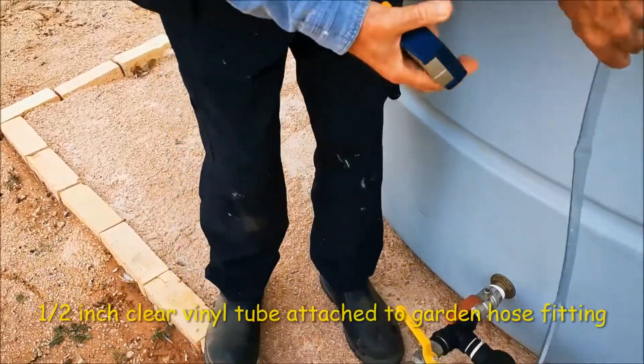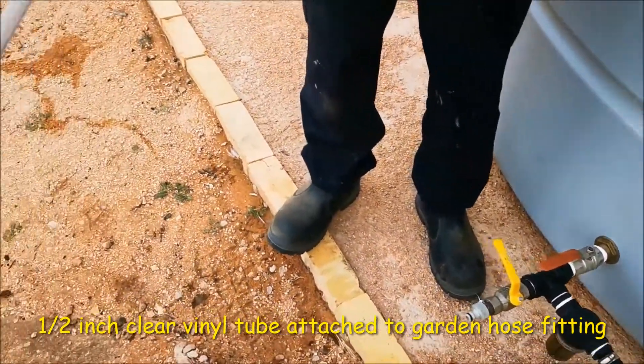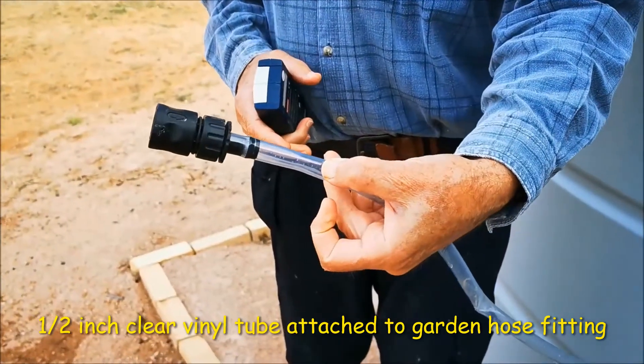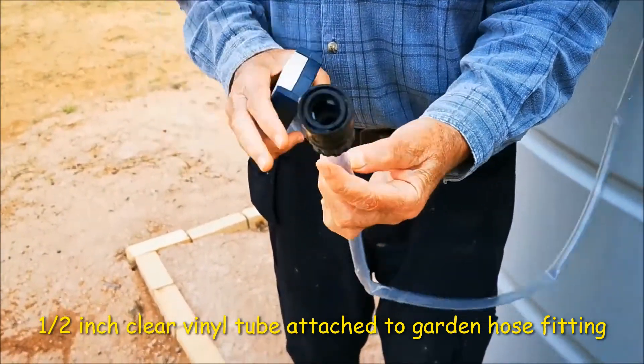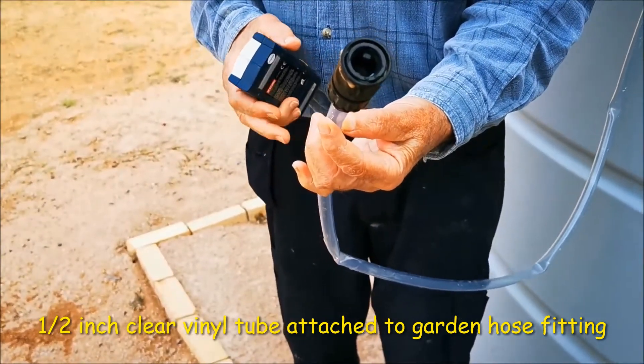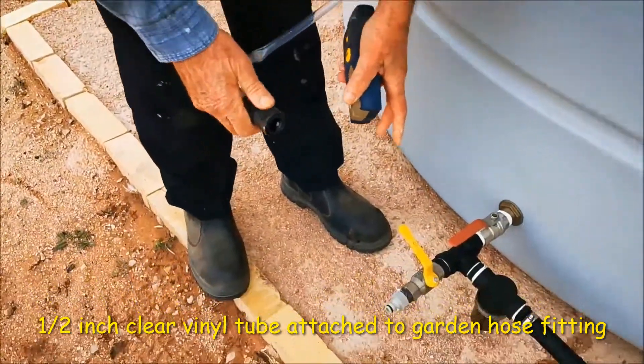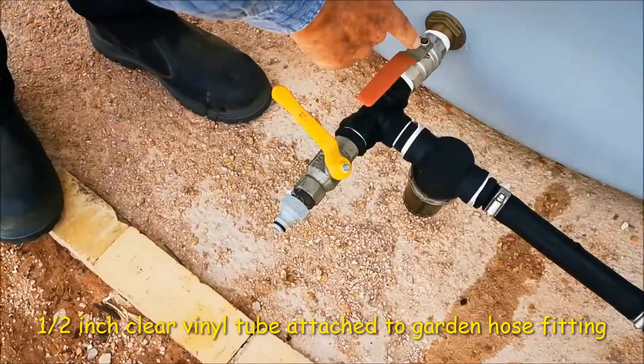So what I do is I just get a piece of half-inch clear vinyl tubing, put a garden hose attachment on the end of it, and plug that in. If you look at my rig here, this is the main tap.